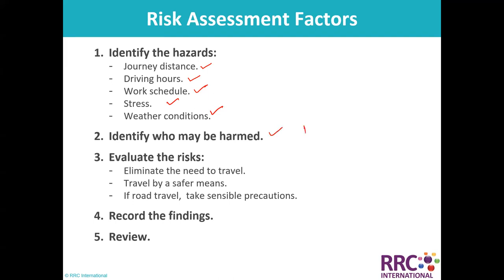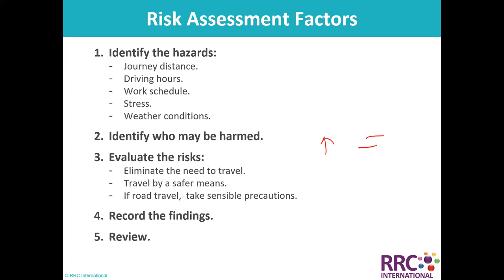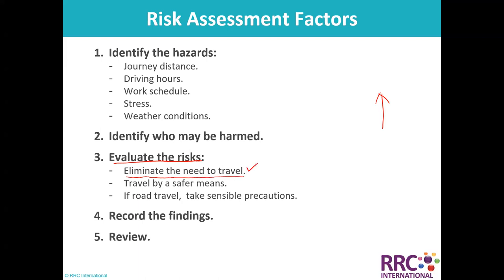Hazards to identify include: journey hazards, driving hours, work schedule, stress, and weather conditions. Those who might be harmed are drivers and all others on the road. When evaluating the risk: if it is high, we control it by eliminating the need to travel. If elimination is not possible, travel by safer means such as taxi or railway. If road travel is necessary, take sensible precautions such as defensive driving training.